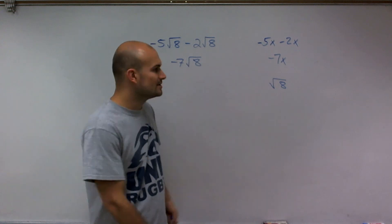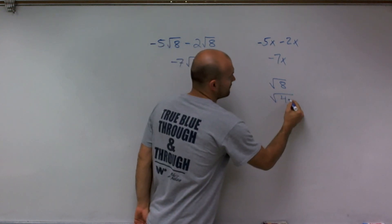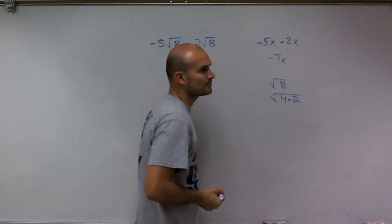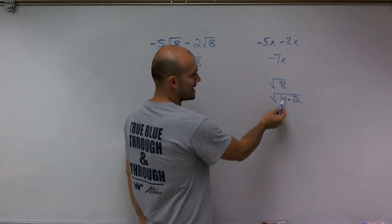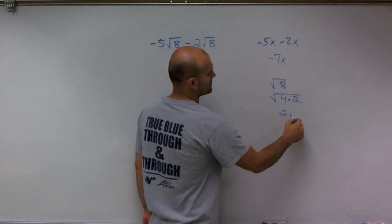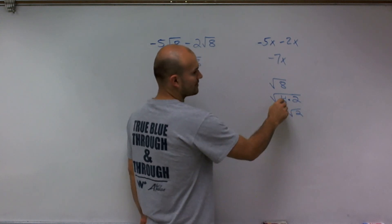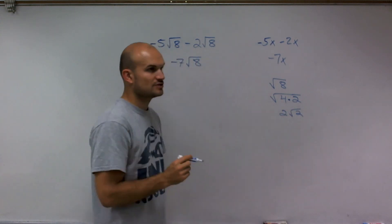If I rewrite this as the square root of 4 times 2, using my rules of radicals, I can now take the square root of 4 to give me 2. Square root of 4 is 2, 2 times square root of 2.